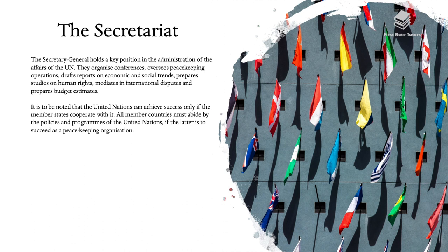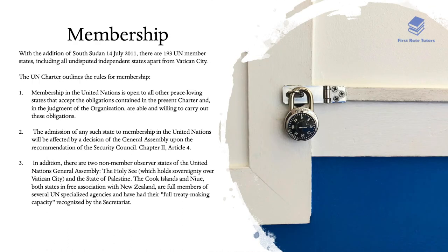It is to be noted that the UN can achieve success only if member states cooperate with it. All member countries must abide by the policies and programs of the UN if it is to succeed as a peacekeeping organization. With the addition of South Sudan in July 2011, there are 193 UN member states, including all undisputed independent states apart from Vatican City.